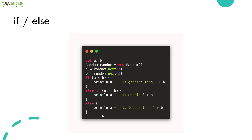In this example, we have a random number A and B, both generating random numbers. If A is greater than B, then it will print 'A is greater than B.' Otherwise, it will go to the else-if. If A equals B, it will print 'A equals B.' Otherwise, it will print 'A is less than B.' This is a simple example using the if-else statement in Groovy.